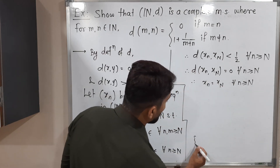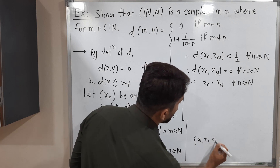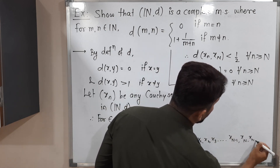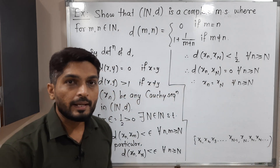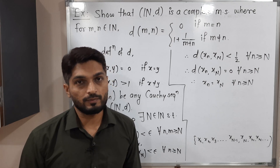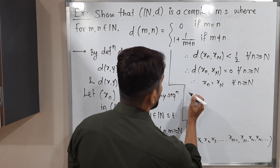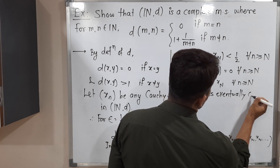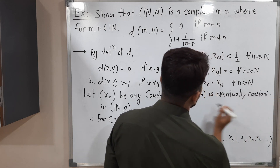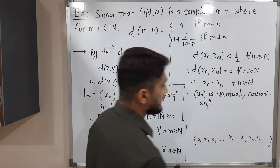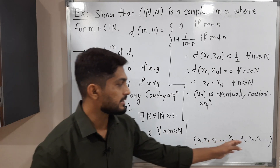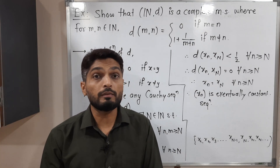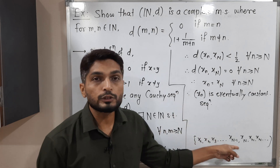That means the sequence looks like: X_1, X_2, X_3, ... up to X_{N-1}, and after the Nth term all terms are the same: X_N, X_N, X_N, and so on. When we get this type of sequence, we call it an eventually constant sequence. Therefore, X_n is an eventually constant sequence. Our target is to prove the Cauchy sequence is convergent, so we will prove X_n converges to X_N.